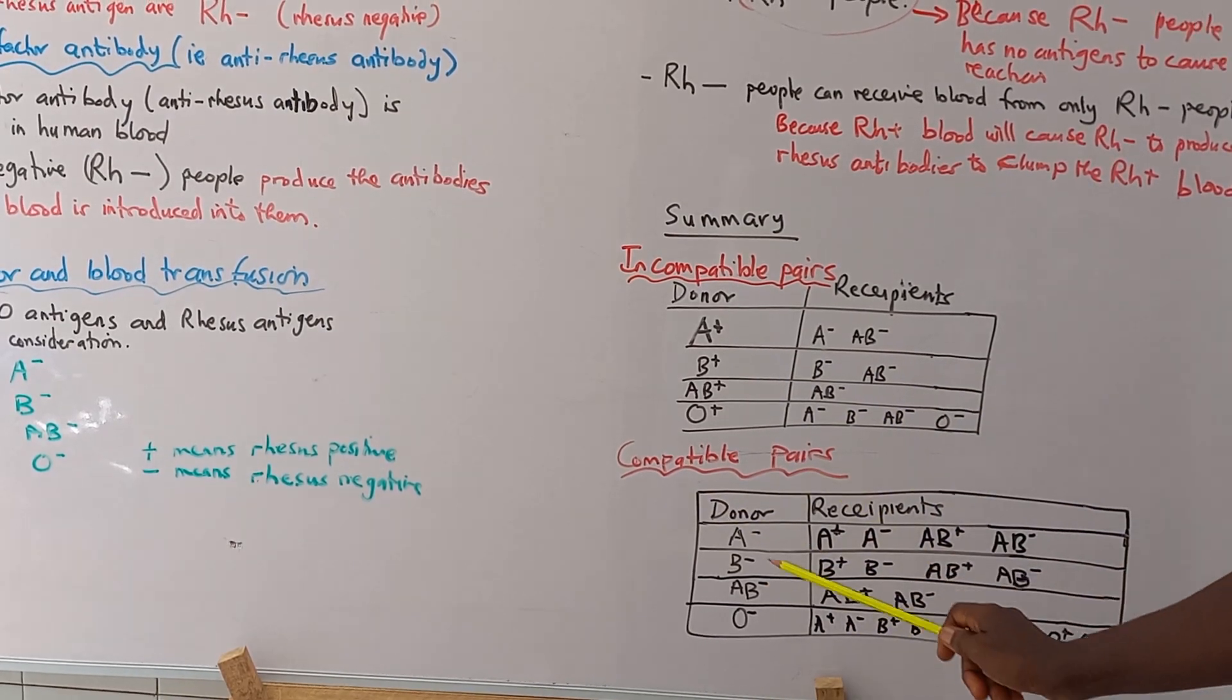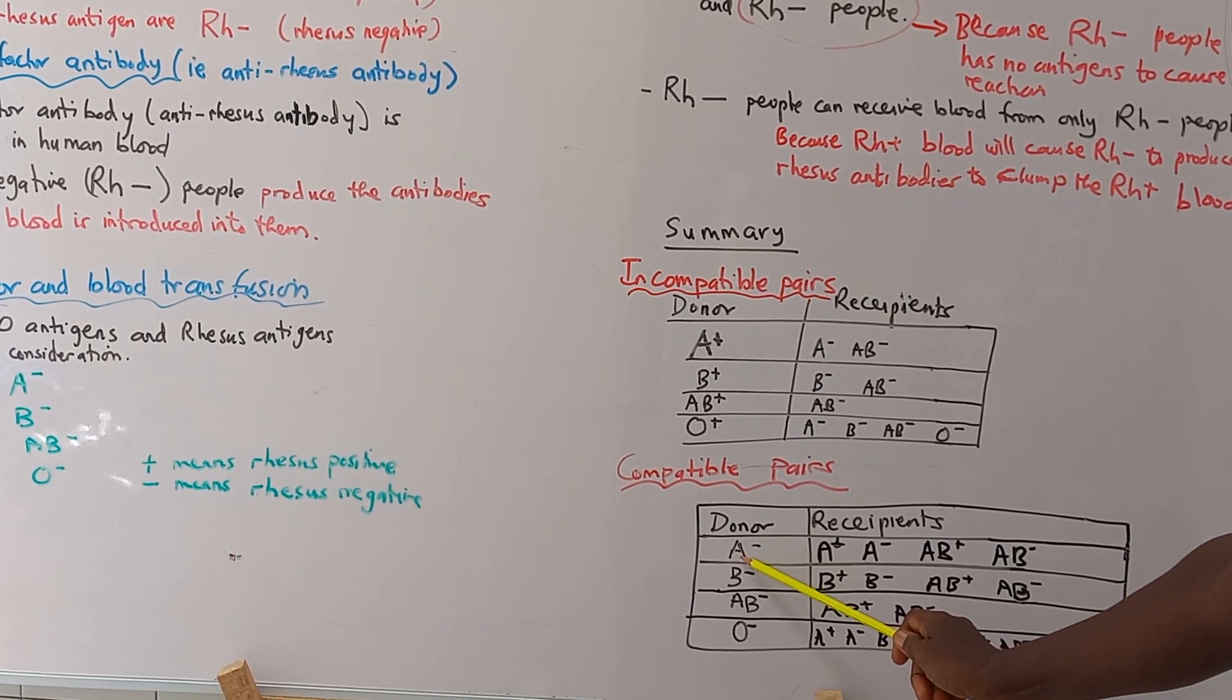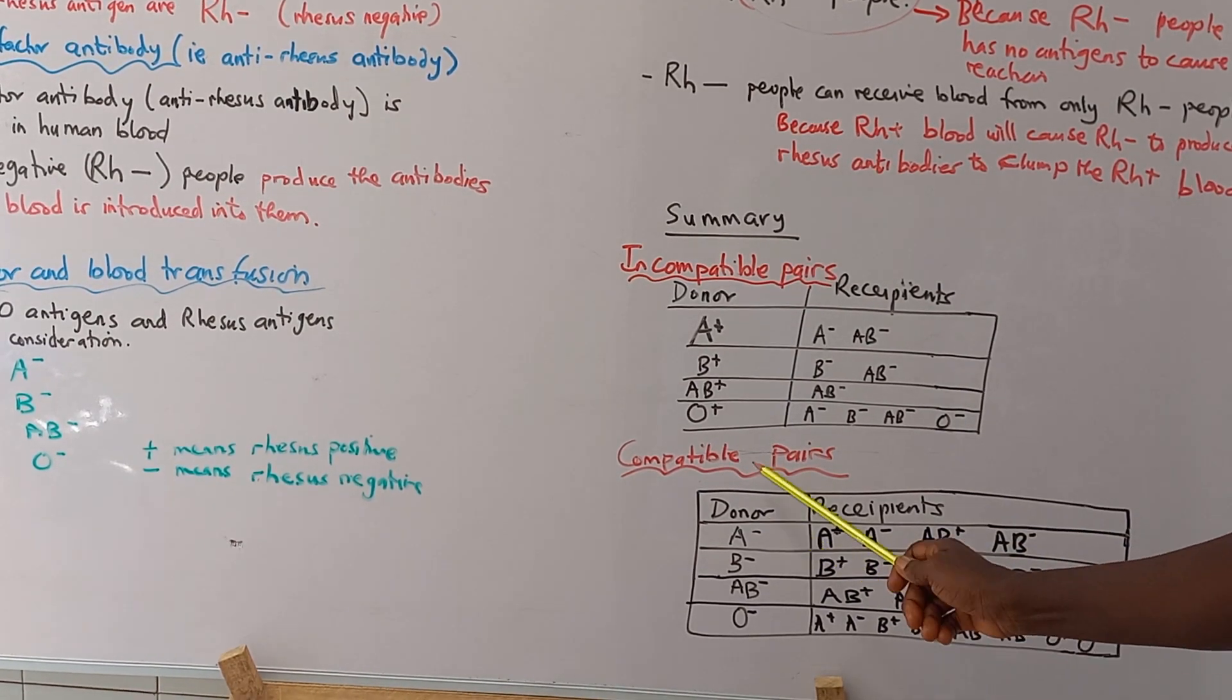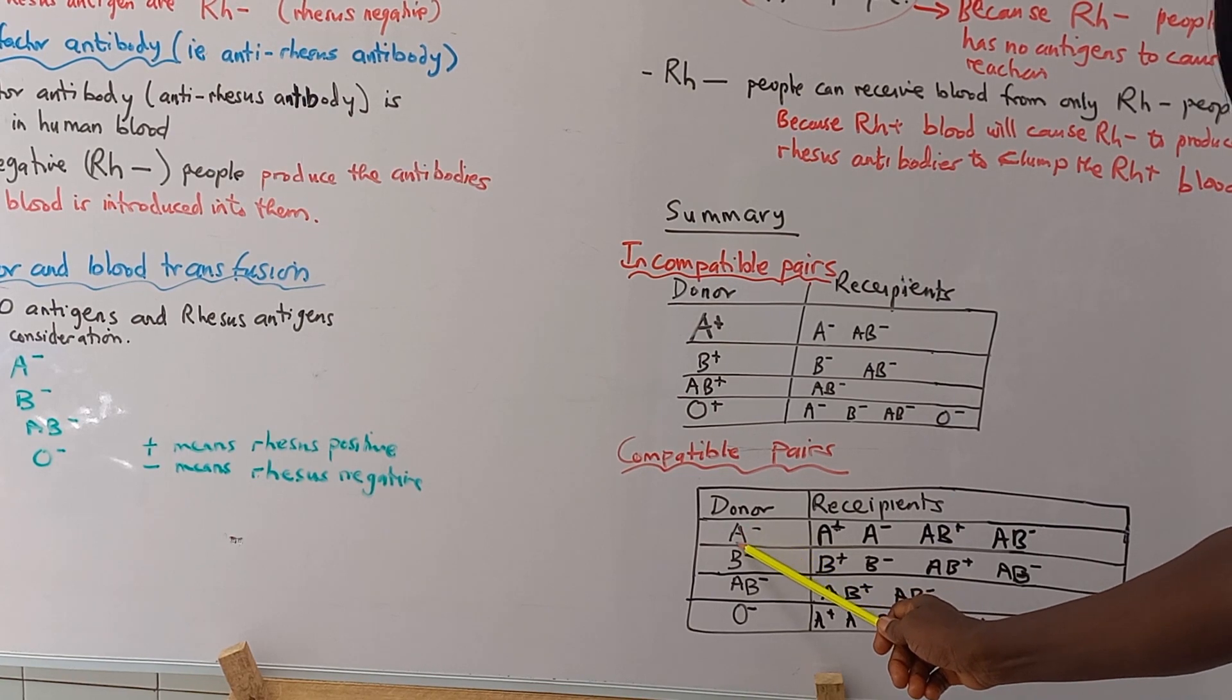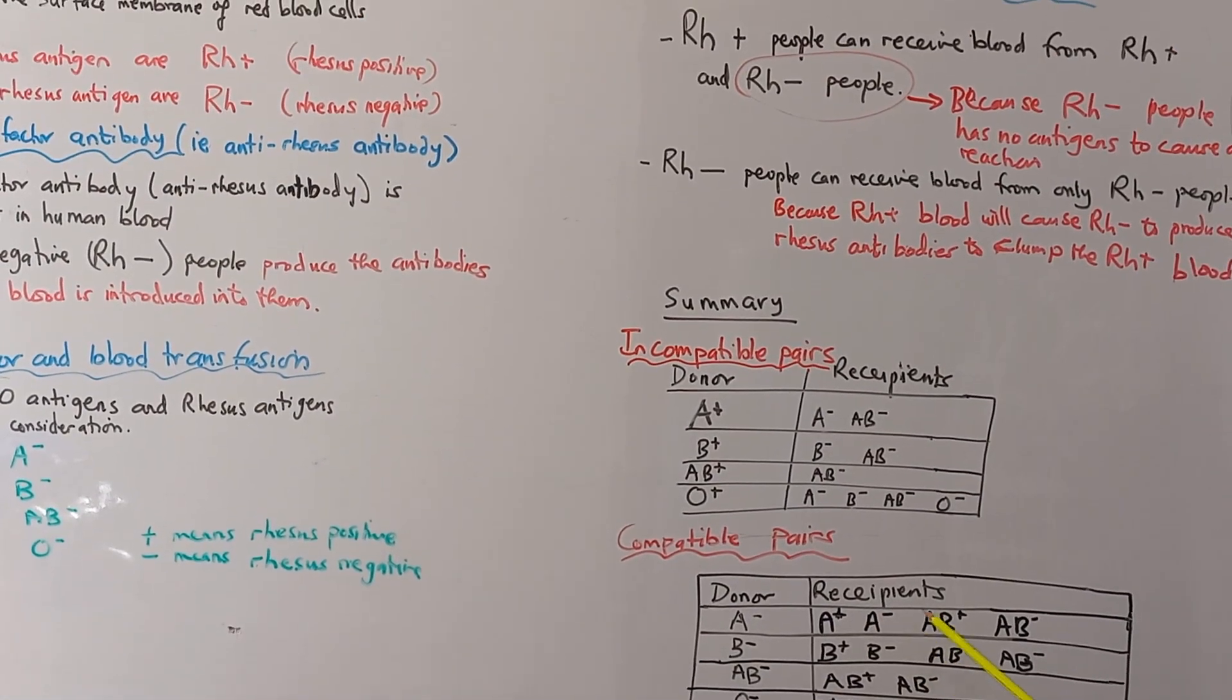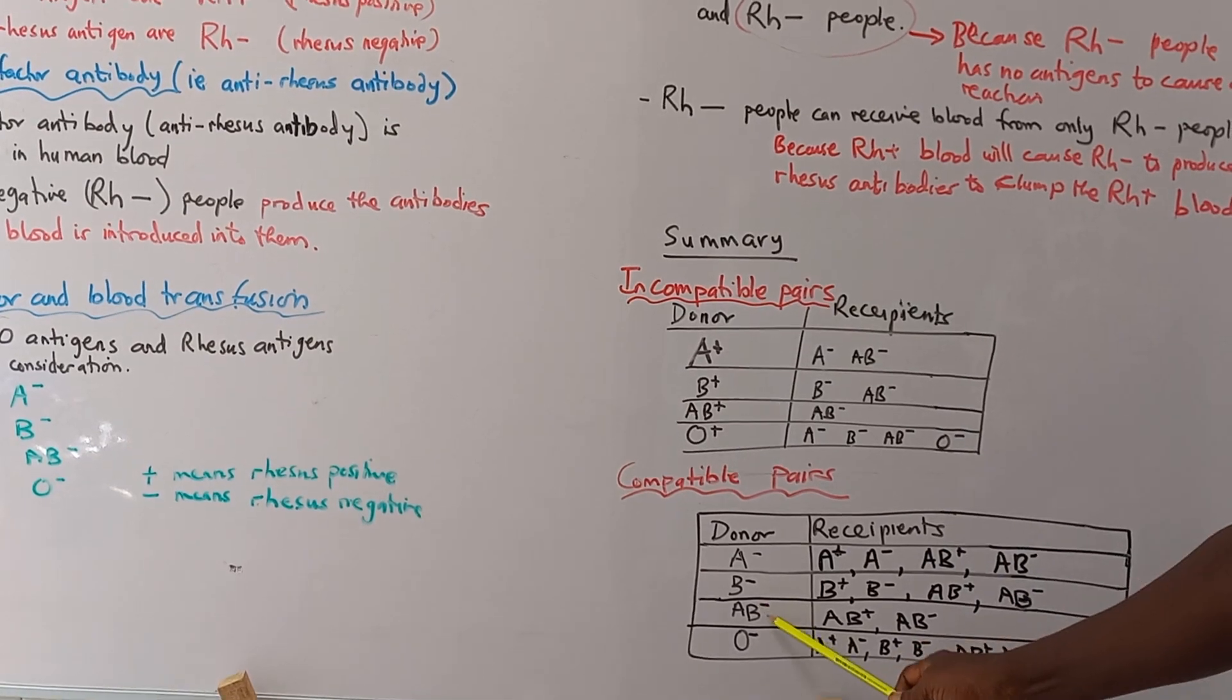Compatible pairs: blood group A, all negatives. You remember blood group A can donate blood to blood group A and blood group AB. But the Rhesus factor will have to be taken note. So blood group A negative can give blood to blood group A positive and AB positive, AB negative. So you see, that is it.